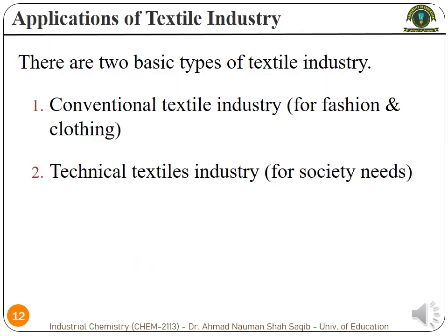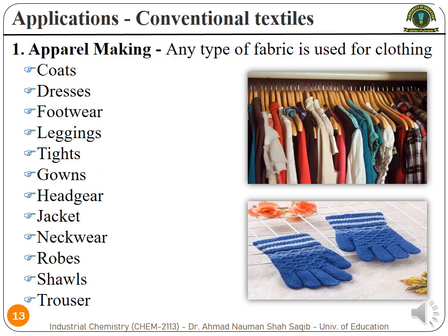Moving to the applications of the textile industry: the applications of textile industry can be categorized into two types. The first is the conventional textile industry and the second is the technical textile industry. The conventional textile industry mainly deals with textile for fashion and clothing, while the technical textile industry mostly deals with textile for society's functional needs. We will briefly overview both types. The conventional textile products can be further categorized into two main categories: one is for apparel making, and the second is for home uses.